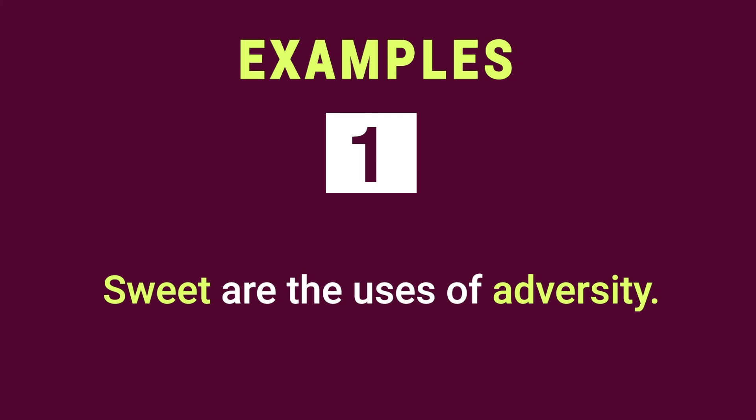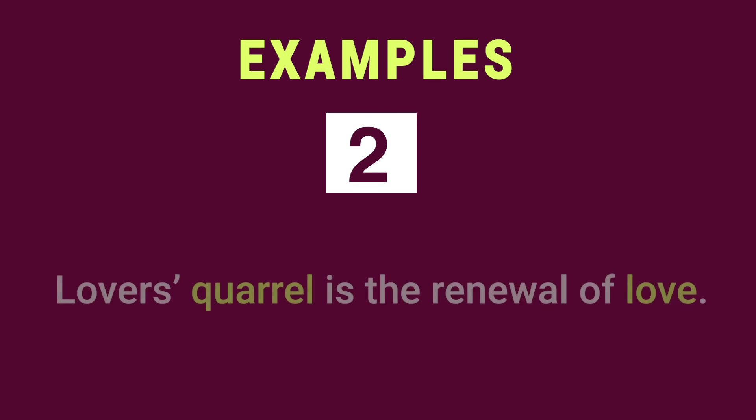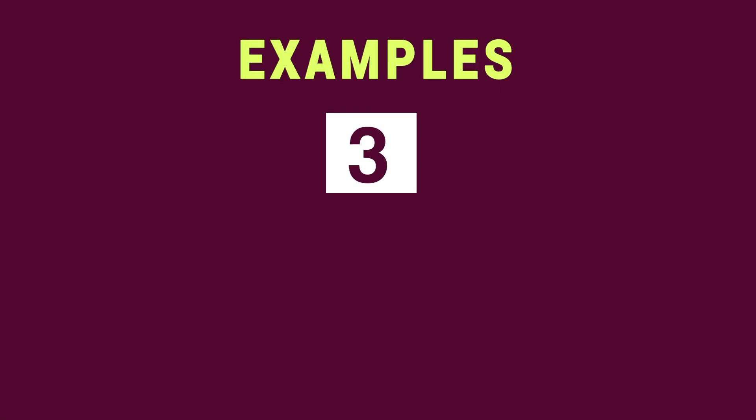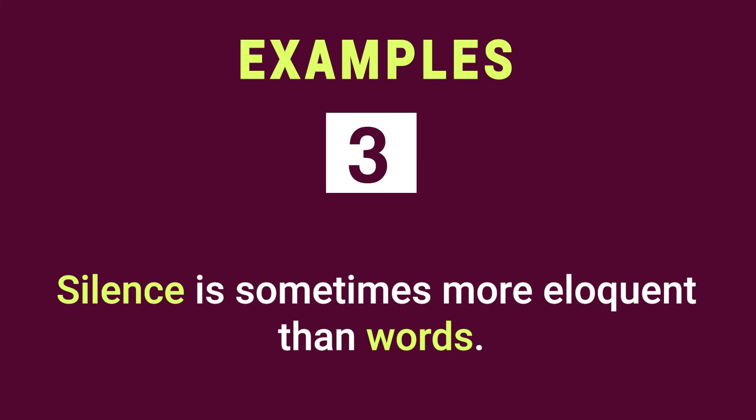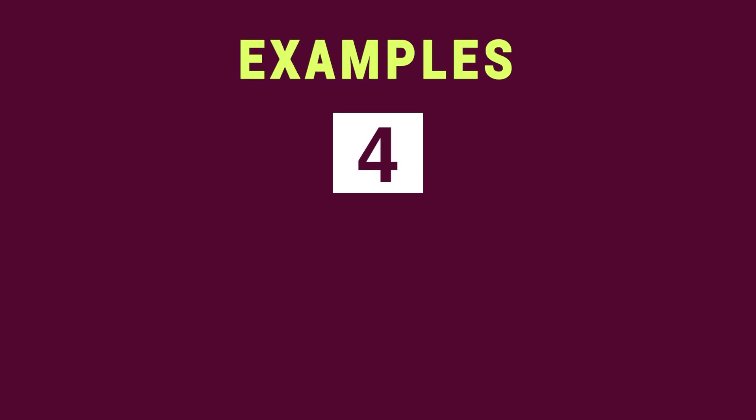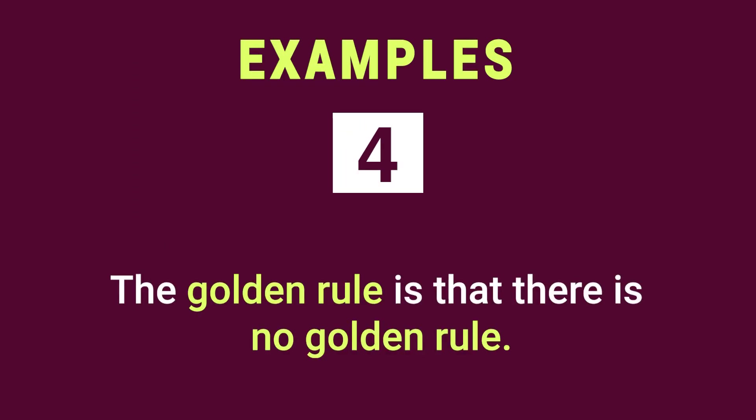All paradoxical statements are epigrammatic in nature and vice versa. Example number two: 'Love's quarrel is the renewal of love' — a very contrasting idea, making you think how a quarrel between lovers leads to the renewal of love. Example number three: 'Silence is sometimes more eloquent than words' — again a contrasting, shocking idea that readers will ponder to understand the underlying truth. Example number four: 'The golden rule is that there is no golden rule' — a very self-contradictory idea, opposite to received opinion. All paradoxical statements are absurd on first reading, but read again they yield a universal truth.